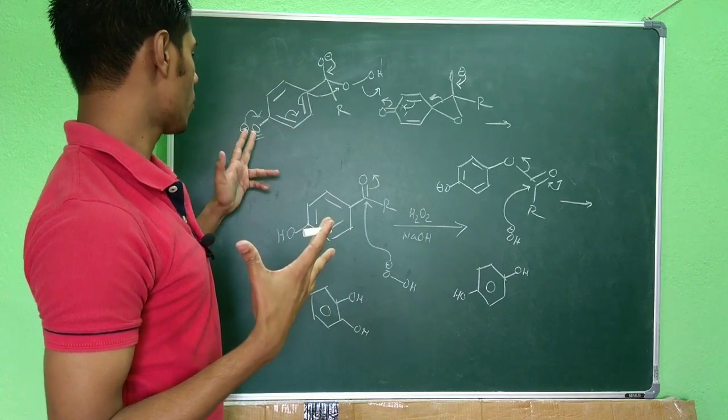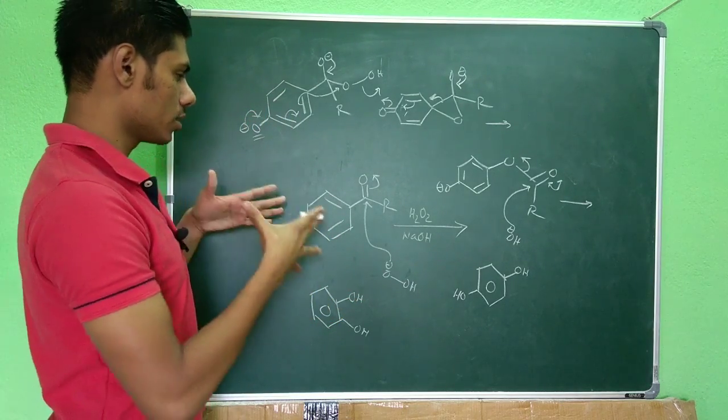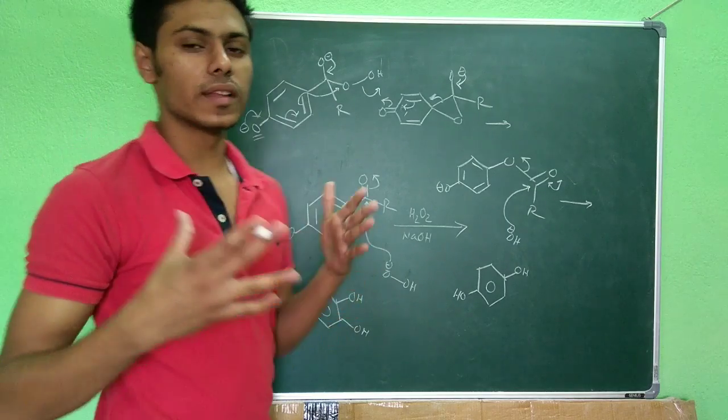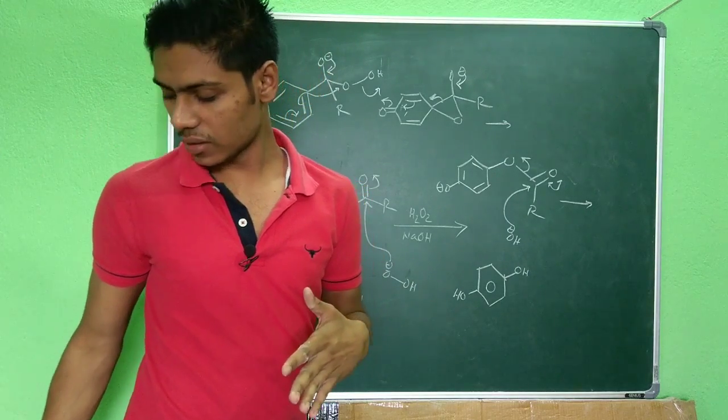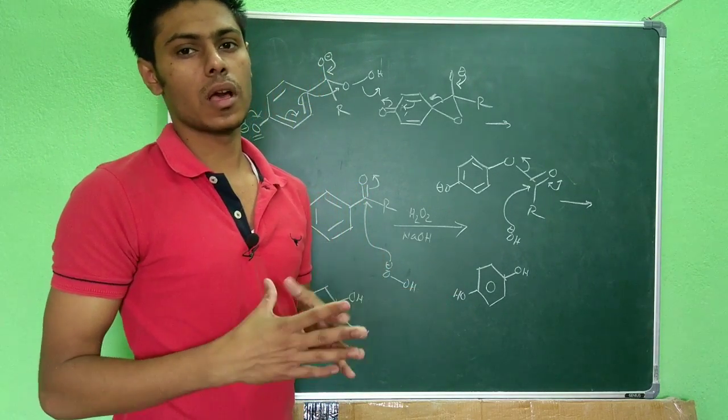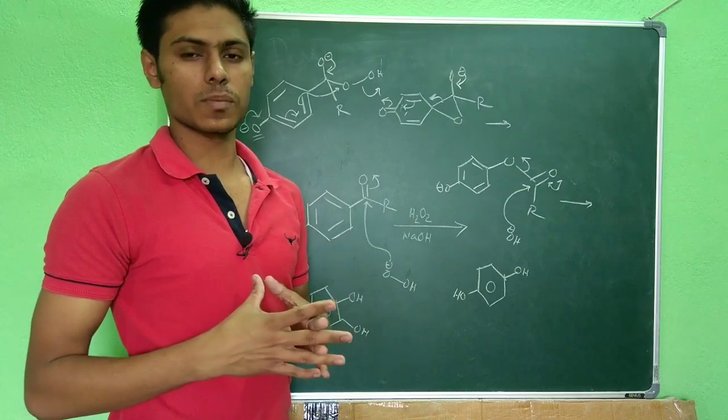So when you have oxygen at ortho or para position, this reaction can happen and it is called the Dakin reaction. So these are the two important reactions of H2O2, the hydrogen peroxide.